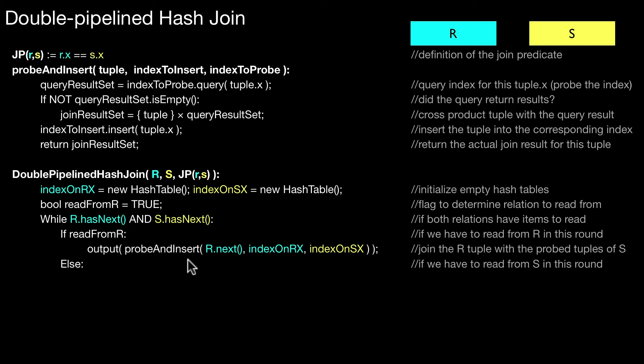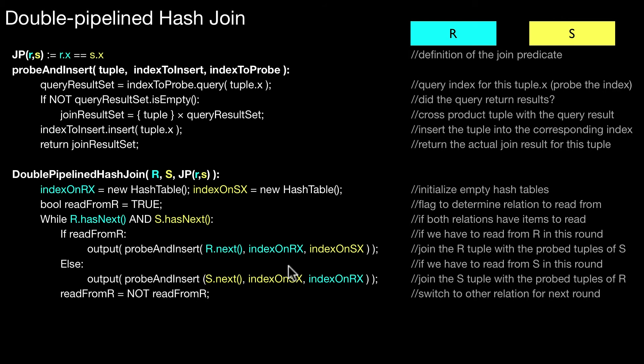If you decide to draw from S then you do the opposite. You pass the next element of S to this probe and insert method and the hash table belonging to that input S. It is just basically swapping the roles, inverting the roles of the two indexes. That is the strategy. I always change by flipping this bool value.